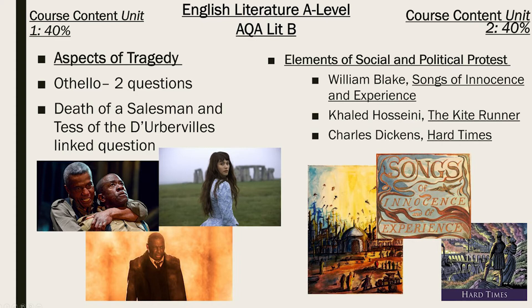The course is made up of three main elements. The study of tragedy, where we look at Tess of the d'Urbervilles and Death of a Salesman. The study of political and social protest writing, where we investigate The Kite Runner, Hard Times, and Songs of Innocence and Experience by William Blake.